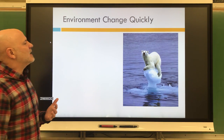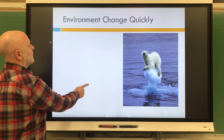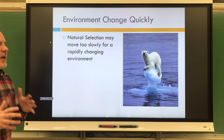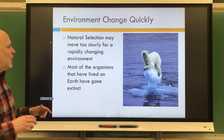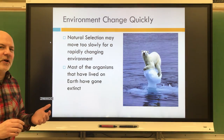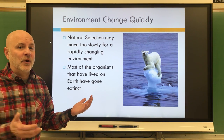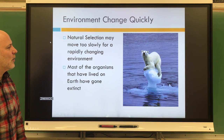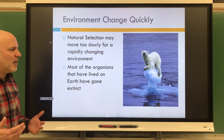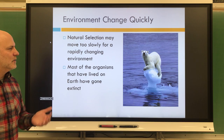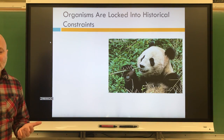One of the things that can be bad for organisms is that environments can change quickly, so natural selection may move too slowly for a rapidly changing environment. Most of the organisms that have lived on earth have actually gone extinct because of this — on the order of 99.99999 percent of all organisms. I'm showing a polar bear here because their environment is changing very rapidly due to climate change.